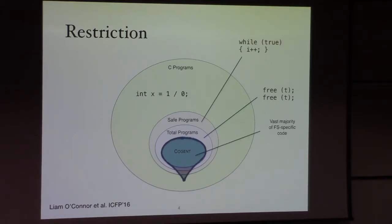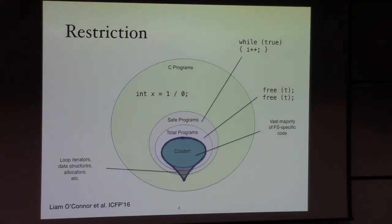The vast majority of file system code can be written in Cogent, with an extra bit outside of it which consists of loop iterators, common data structures, and memory management code, which can be shared across many file system implementations. That's basically a one-off effort.